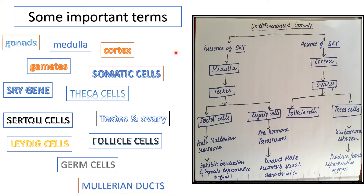Let's start with gonads. Gonads are organs that produce gametes — a testis or an ovary. We studied these in classes 11 and 12. Gametes are mature haploid male or female germ cells. When we study a topic and feel we already know it, we should be able to describe it clearly — if we can describe a term, we truly understand it; if not, we only have a superficial idea, which is a disadvantage.